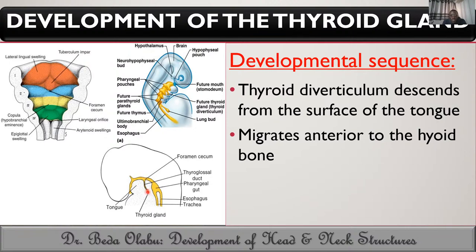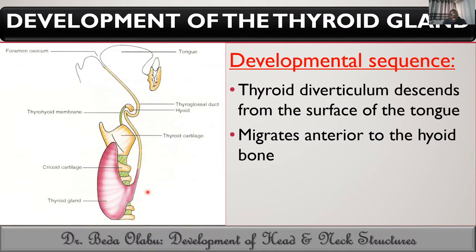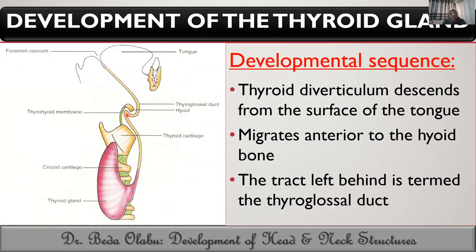As the thyroid gland migrates downwards, it leaves behind a tract known as the thyroglossal duct — 'thyro' for thyroid and 'glossal' for the tongue. It is a duct connecting the thyroid gland and the tongue, which is why it is known as the thyroglossal duct.